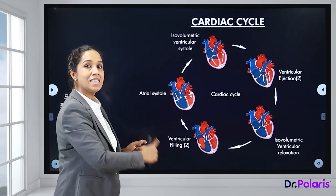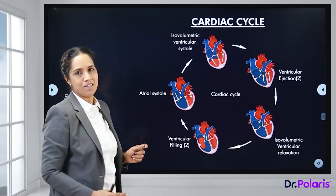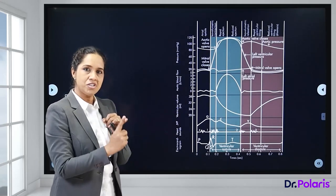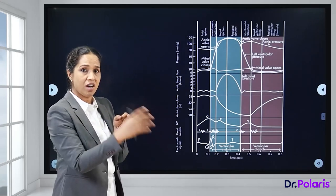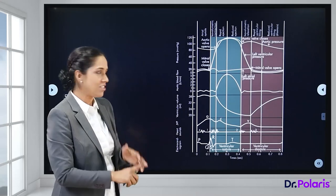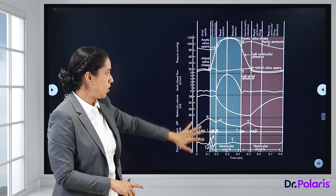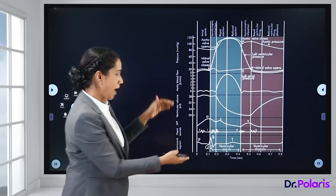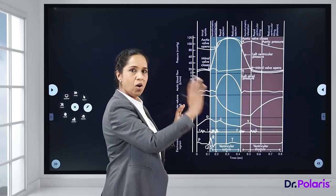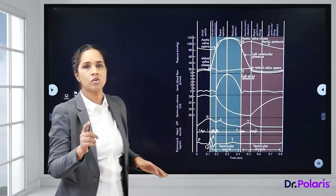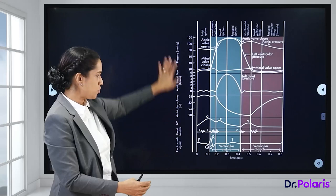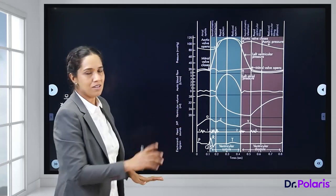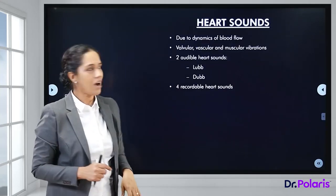Between two heartbeats, these cyclic changes — atrial systole, isovolumetric contraction, rapid ejection, slow ejection, isovolumetric relaxation, rapid passive filling, slow passive filling — continuously repeat. All pressure changes, volume changes, heart sounds, and ECG correlations are depicted together in one graphical form, which will now be explained by breaking down each component individually.